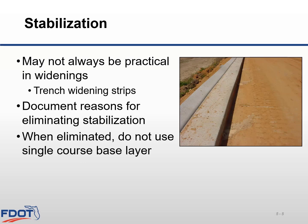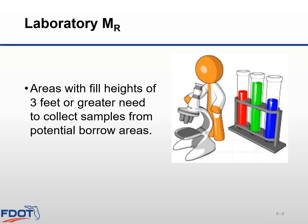Stabilization should be considered when adding lanes or shoulders and on some operational type projects. The use of stabilization in trench widening strips is generally not recommended. When stabilization is eliminated, the reasons should be documented in the project file. When stabilization is not provided, single course base layers should not be used. For widening projects such as the addition of a new lane with substantial fill heights in excess of three feet, soil samples should be obtained from potential borrow areas. The lab resilient modulus should be obtained for the new embankment to evaluate if additional pavement structure is needed for the widening.